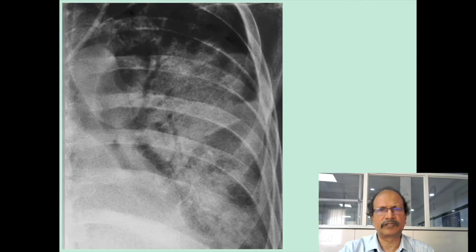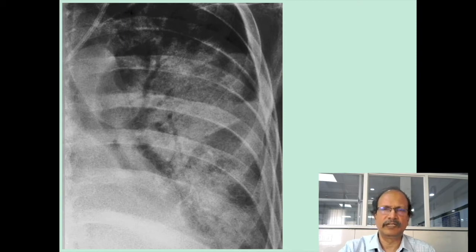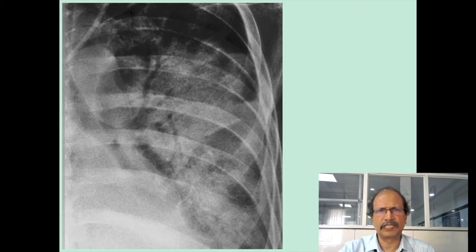This is the X-ray appearance of typical lobar pneumonia. The whole lobe is converted into an opaque shadow. You can see the tracheobronchial tree highlighted by what is known as an air bronchogram — the bronchial tree appears darker in color, and this air bronchogram is typically seen in lobar variety of pneumonia.